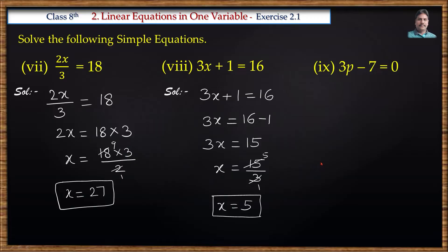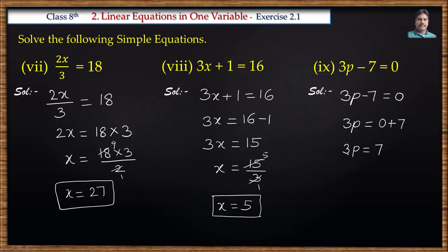Next one: 3p minus 7 is equal to 0. We transpose minus 7 to the right side, it becomes plus 7: 3p is equal to 0 plus 7, which is 7. Then we divide the right side by 3, so p is equal to 7 by 3.